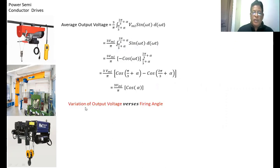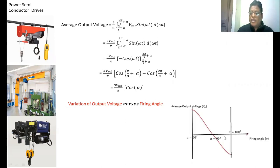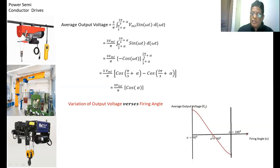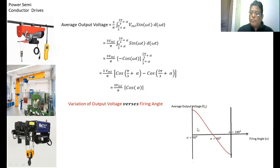This is the expression for the average output voltage. Looking at the variation of output voltage versus firing angle: take the firing angle on the x-axis and average output voltage on the y-axis. The firing angle can vary from 0 to 180 degrees. If alpha equals zero, the voltage equals 3VmL/π. If alpha equals 90 degrees, the voltage becomes zero. If alpha equals 180 degrees, the voltage becomes −3VmL/π. Joining these points as a cosine function gives the characteristic curve.